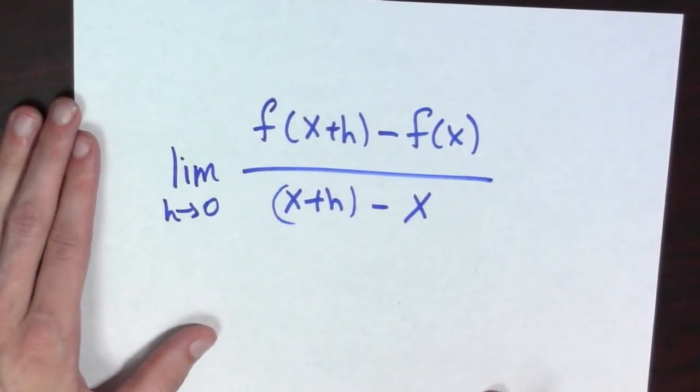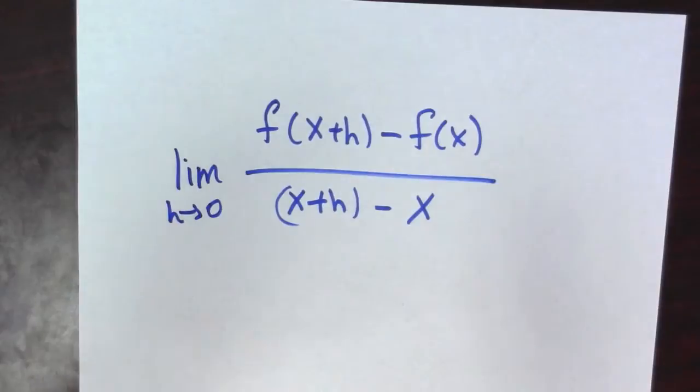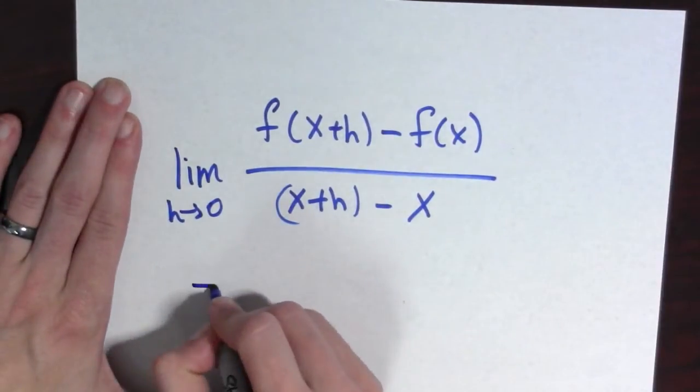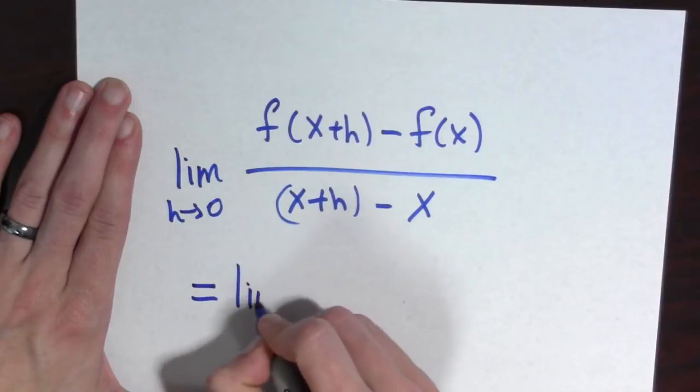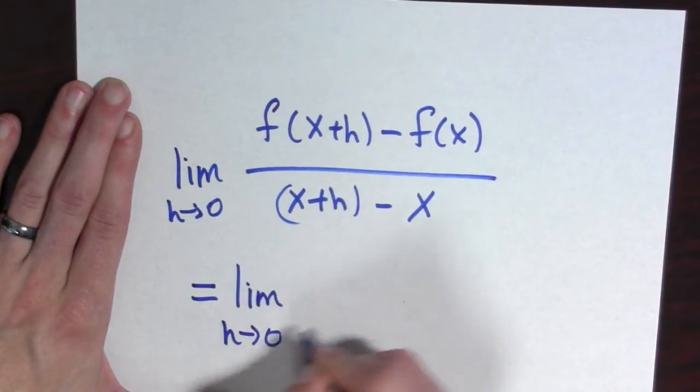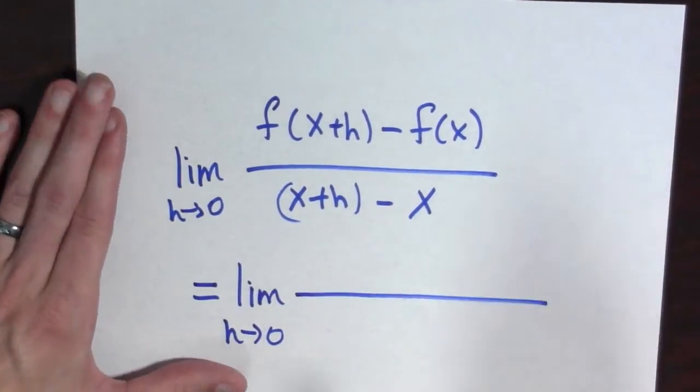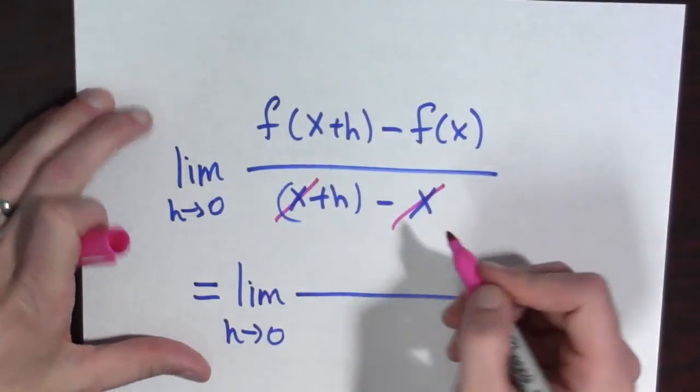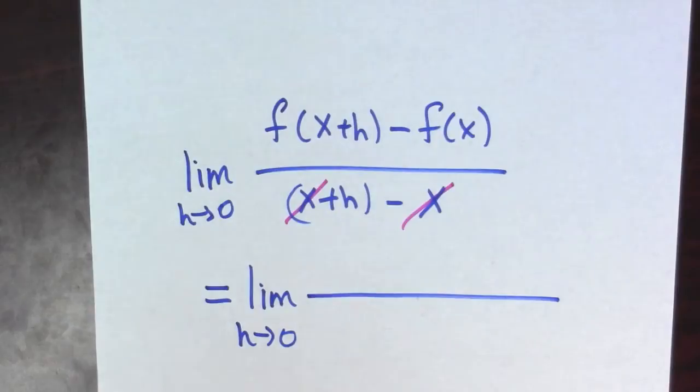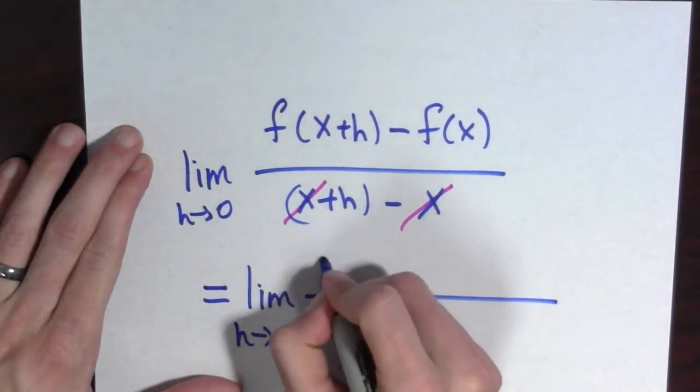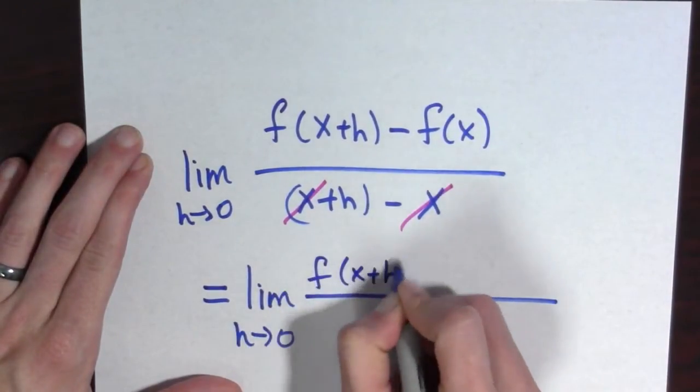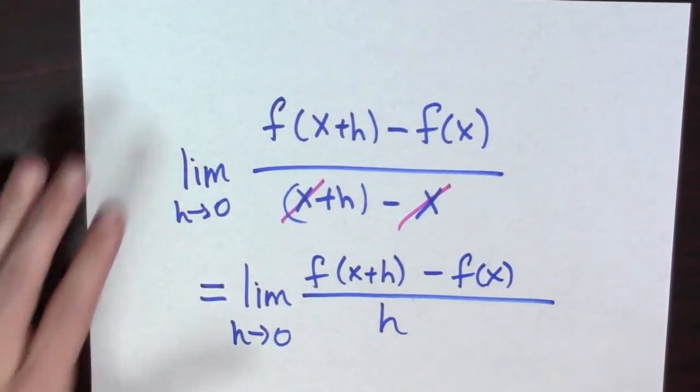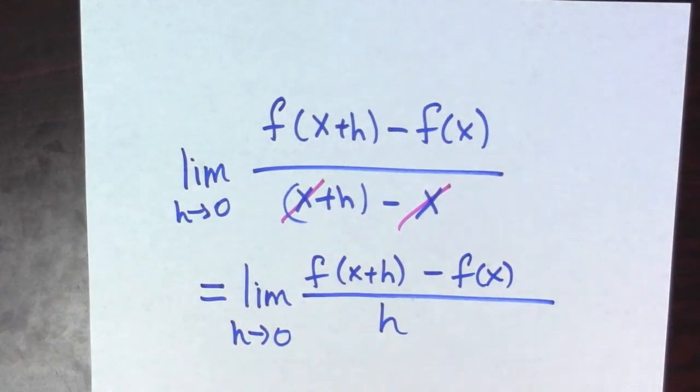Now you may say to me, but Bart, this doesn't look like the formula that we see in the textbook. Well, no, it doesn't look quite like it because what they've done is they've simplified it a bit and disguised the fact that it's just the slope formula because when you look at the denominator here, the x's cancel and you're going to have h down here. So it's f of x plus h minus f of x all over h and you take the limit as h goes to 0.